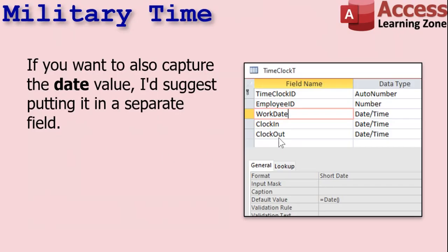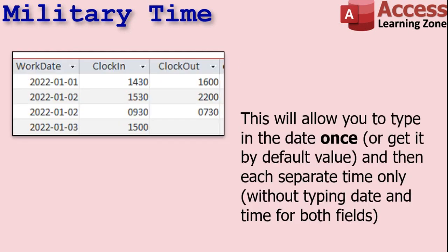This also works if you only have people clocking in and clocking out within the same day — and it doesn't span over midnight. If you have a shift that can go from 11 PM to 6 AM the next day, then you'll need two different date fields. But if it's all just shift one, shift two type work — nine to five — this will work just fine. This allows you to type in the date just once or get it by default value, and then each separate time only, without having to type in date and time for both fields.